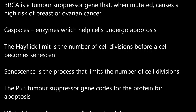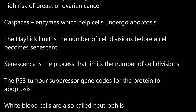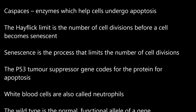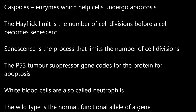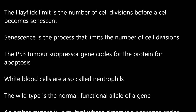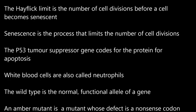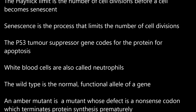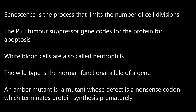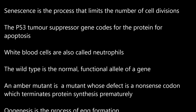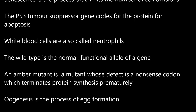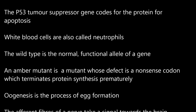The Hayflick limit is the number of cell divisions before a cell becomes senescent. Senescence is the process that limits the number of cell divisions. The P53 tumor suppressor gene codes for the protein for apoptosis. White blood cells are also called neutrophils. The wild type is the normal, functional allele of a gene.